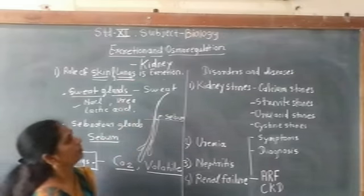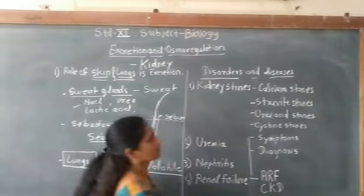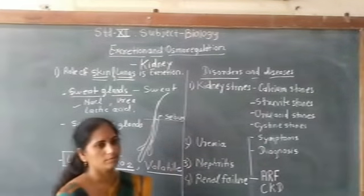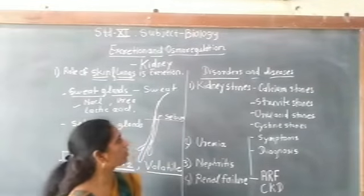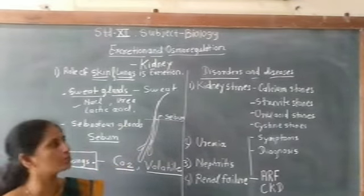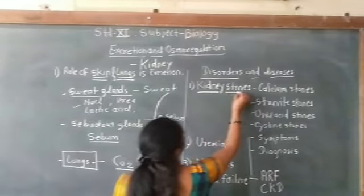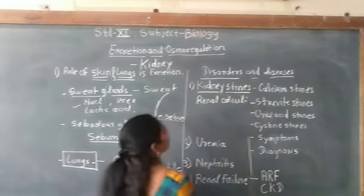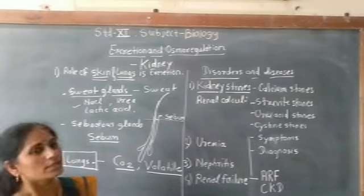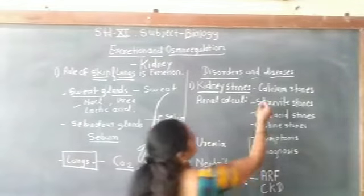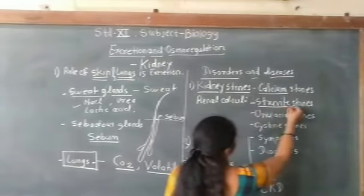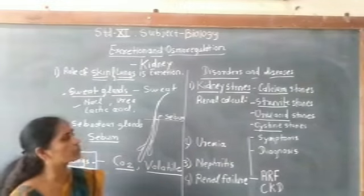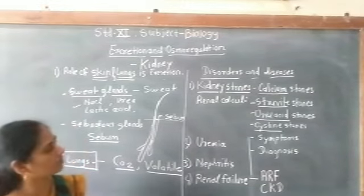The next topic is disorders and diseases related to excretion and osmoregulation. The main diseases related to the kidney include the presence of various types of stones, called kidney stones or renal calculi. These stones are formed from calcium, forming calcium stones; struvite stones; uric acid stones; or cysteine stones — classified on the basis of their chemical composition.